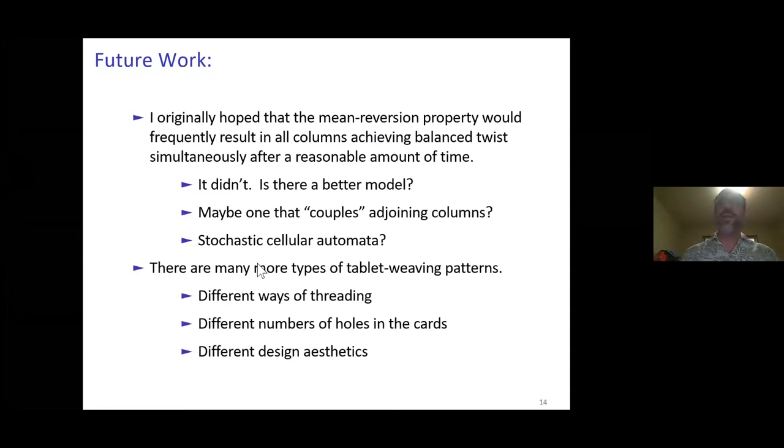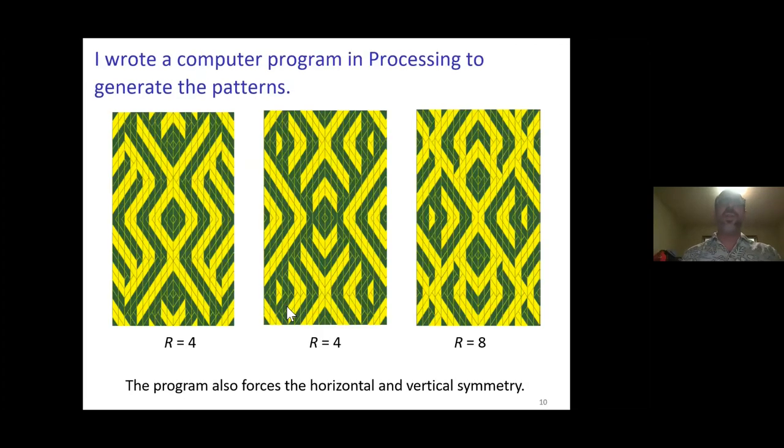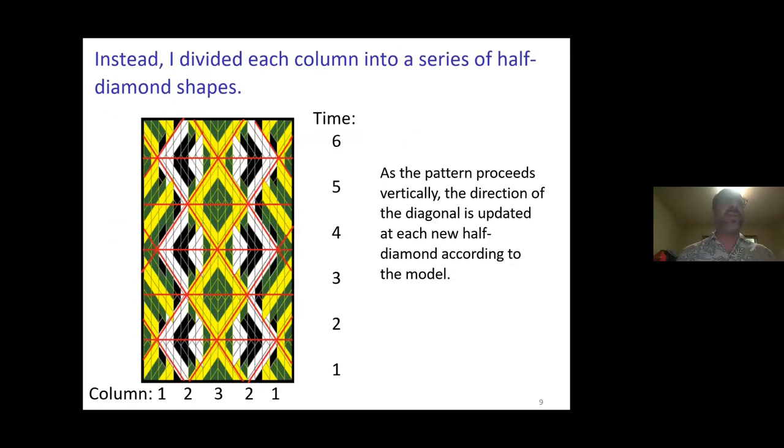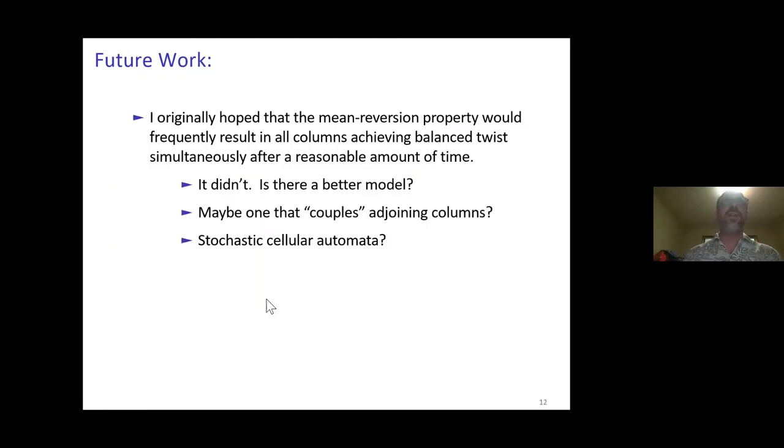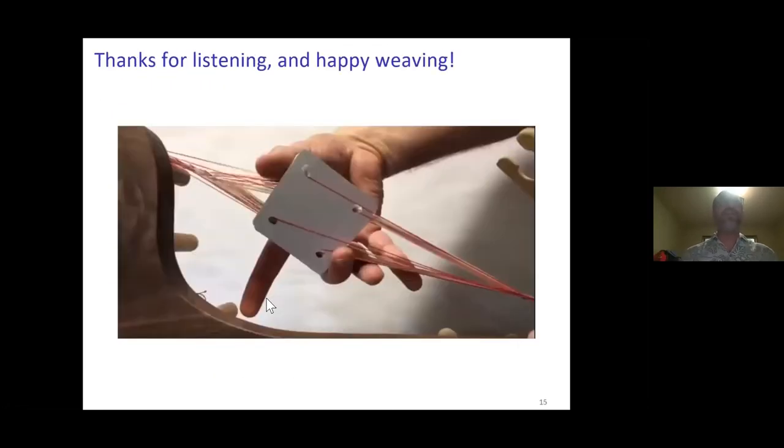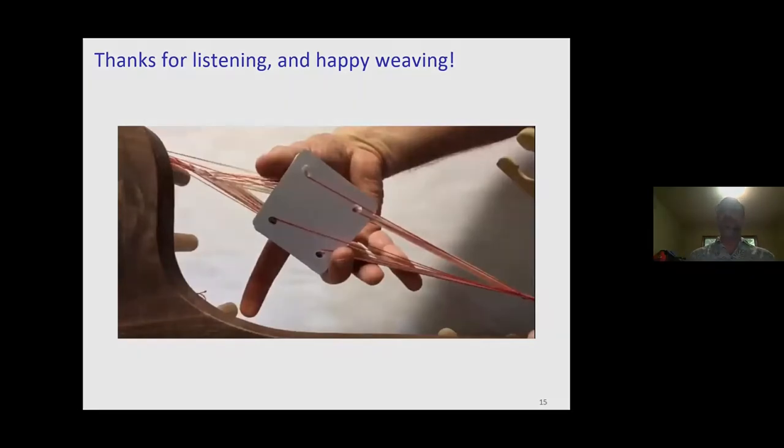I'd like to experiment with other different types of tablet weaving. There are lots of different ways of threading the card. There are cards with different numbers of holes—there are triangular cards, hexagonal cards. There are techniques where you only thread three out of four or two out of the four holes. Even with the same one-and-three threading for Coptic Diamonds and two-and-two threading for Egyptian Diagonals, there are different design aesthetics that have different characteristic ways of dividing up the grid to get different design aesthetics, which would be another thing that I'd definitely like to play with. That's all I've got. Thanks very much and I'm happy to take any questions.